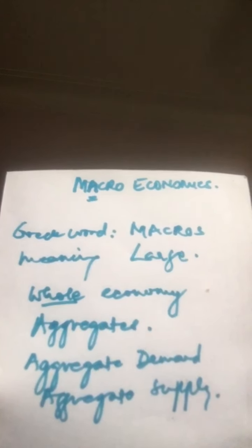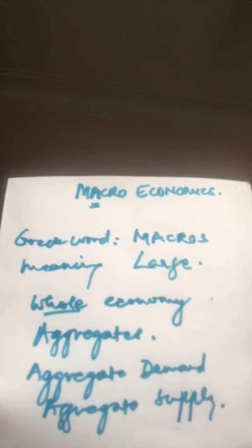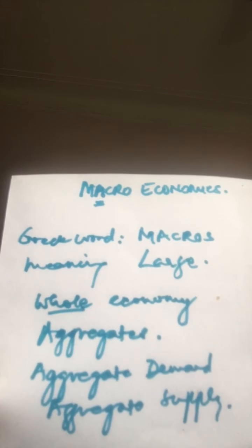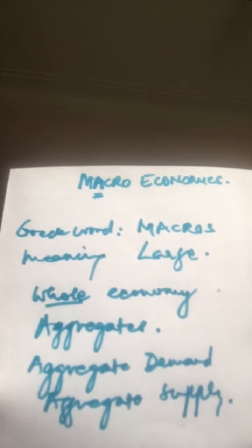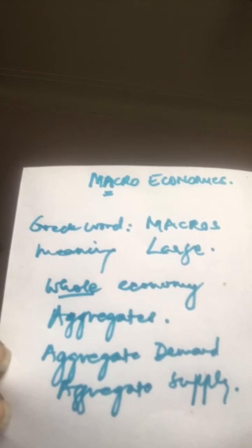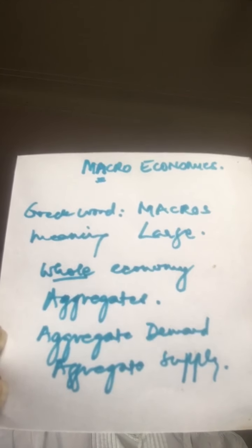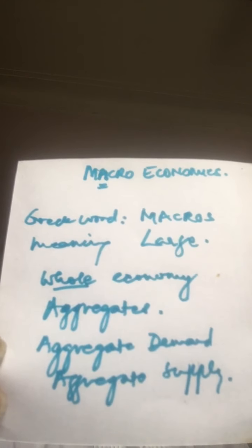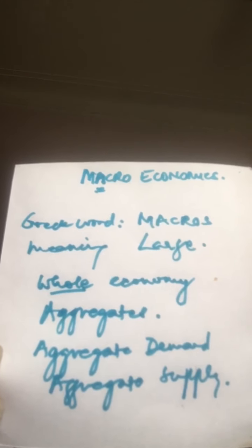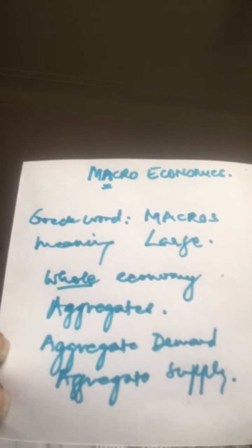Macroeconomics deals not with individual quantities but with aggregates of these quantities. We are talking about the entire income — not individual incomes, but the national income. Similarly, we are not talking about an individual producer's output; we are talking about the national output.